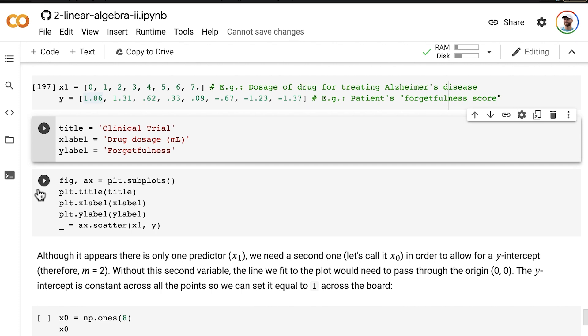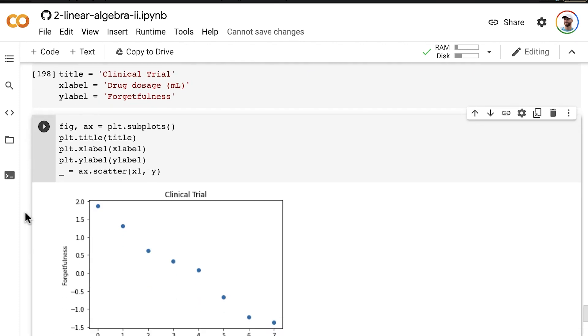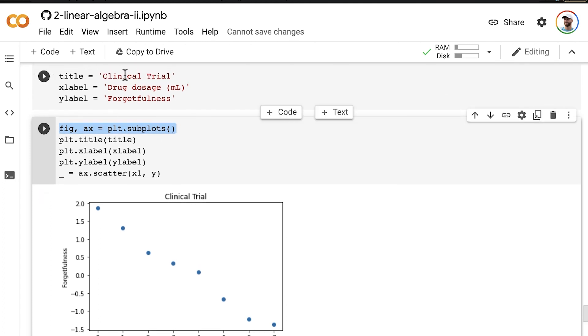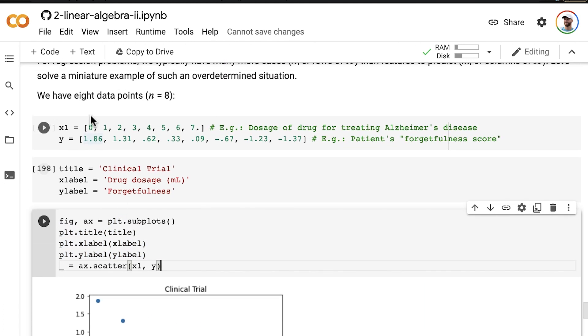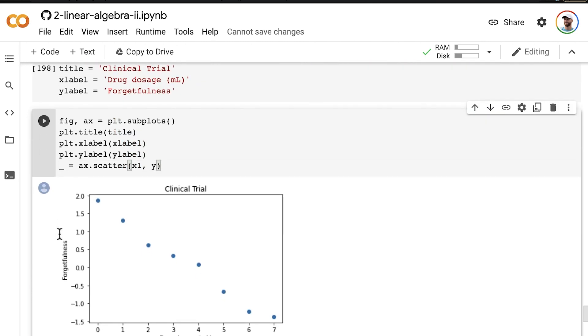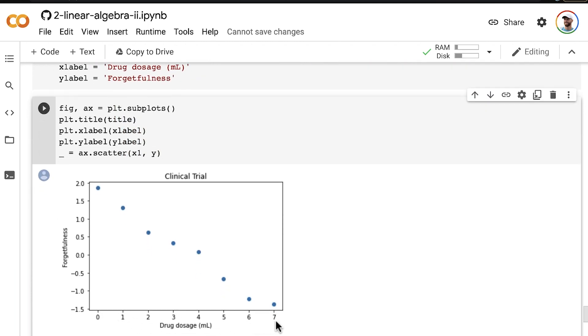Let's plot that out. Pretty simple plot here. Create the plot in matplotlib. We add our title, xlabel and ylabel, respectively, with these three lines of code. And then we use a scatterplot to plot our X and Y values against each other. We can see clearly the more drug dosage, the less forgetful our patient is. So our Alzheimer's drug is working and our patient is less forgetful the more drug that we provide to them.